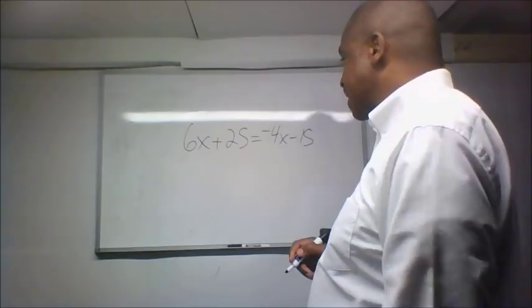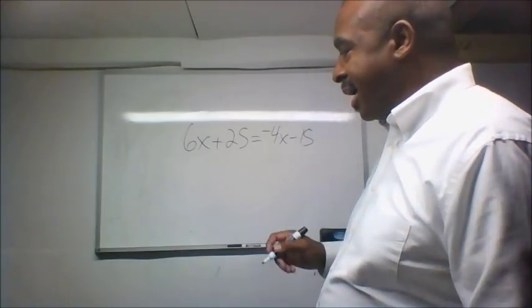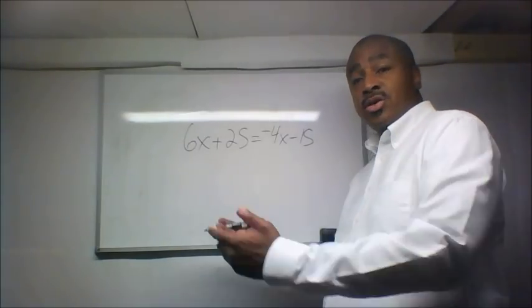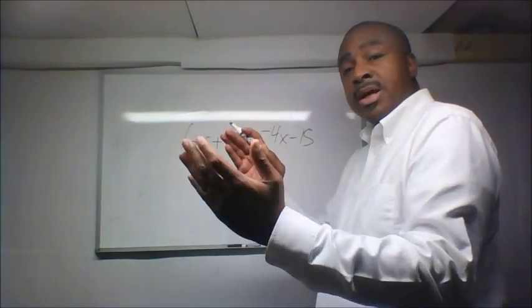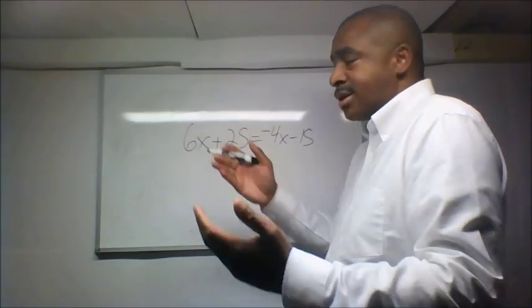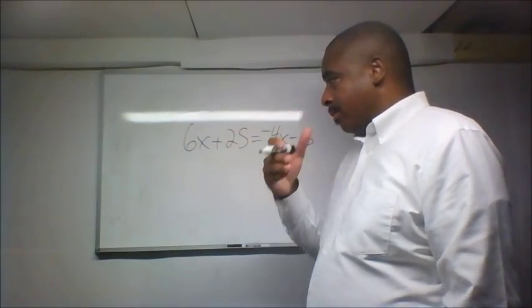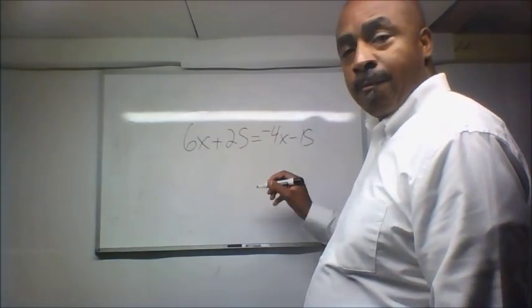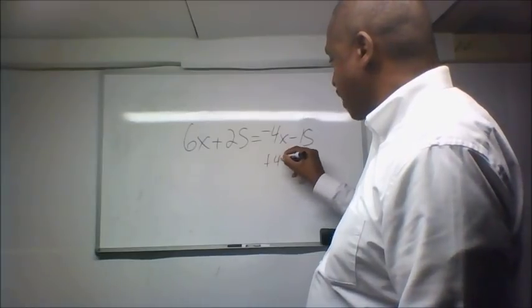So when you combine these like terms, I get this question all the time: Does the x have to be on this side? No, it doesn't. The x can be over here. But because in the English language we read from left to right, I just always defer to the x being on the left side. So we want to do the opposite. So the opposite of minus 4x is positive 4x.